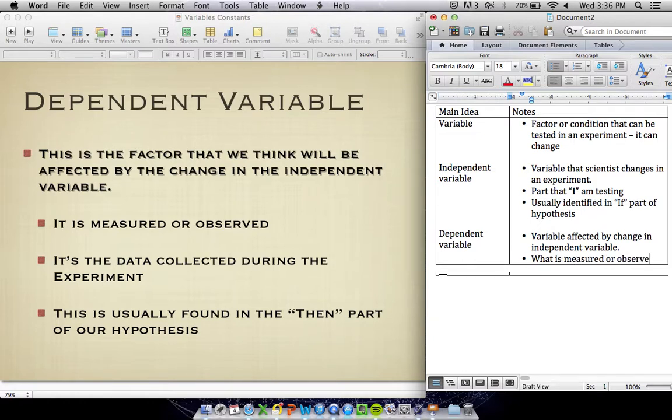This is what is measured or observed in the experiment. To identify the dependent variable, you can think about what are we measuring, what are we observing in this experiment. It's usually identified in our then part of a hypothesis.